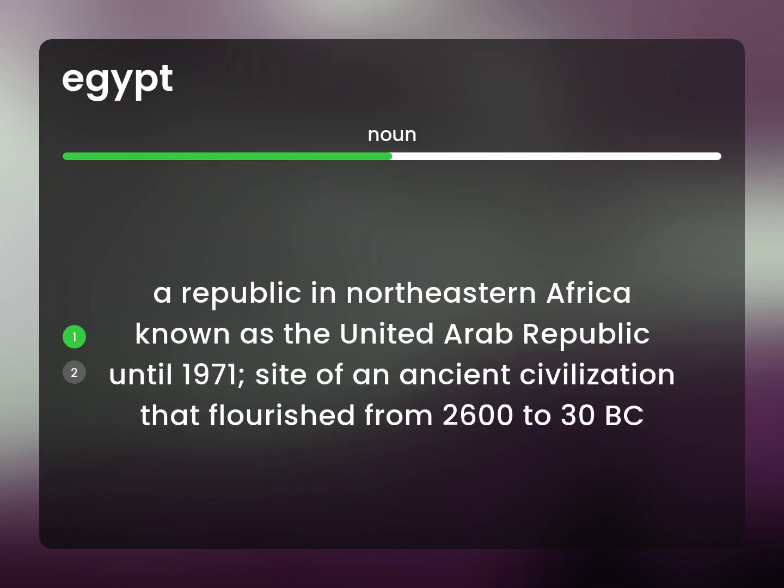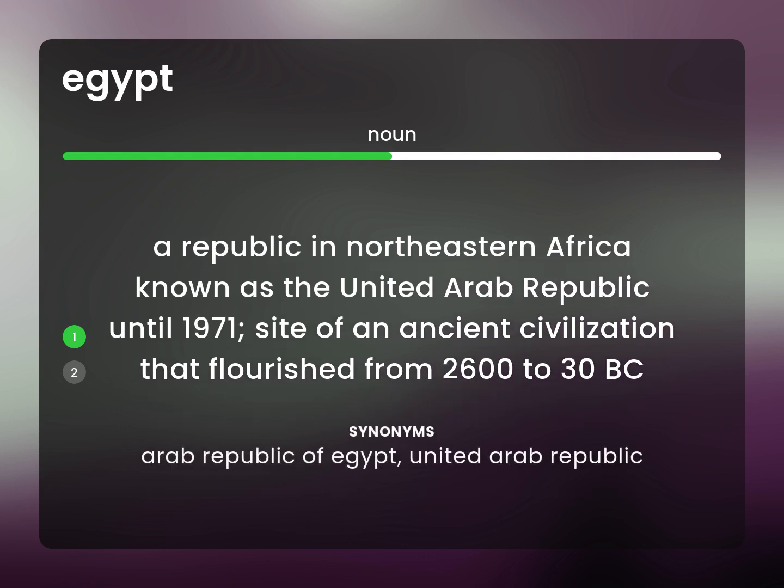A republic in northeastern Africa known as the United Arab Republic until 1971, site of an ancient civilization that flourished from 2600 to 30 BC. Arab Republic of Egypt; United Arab Republic.